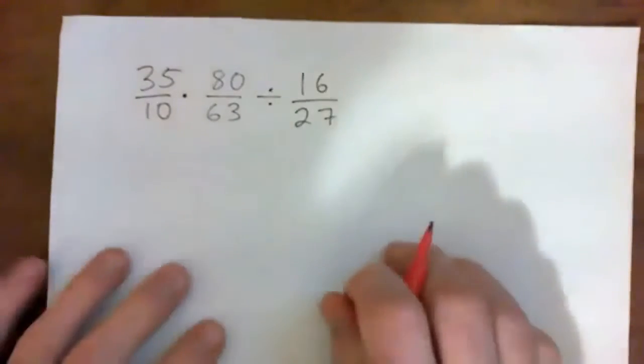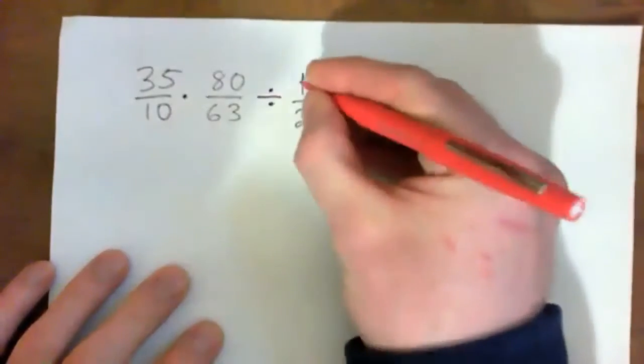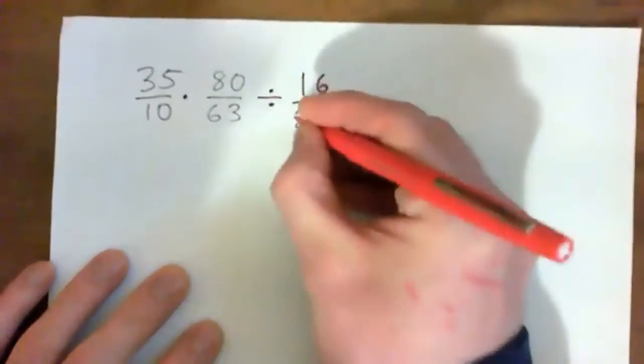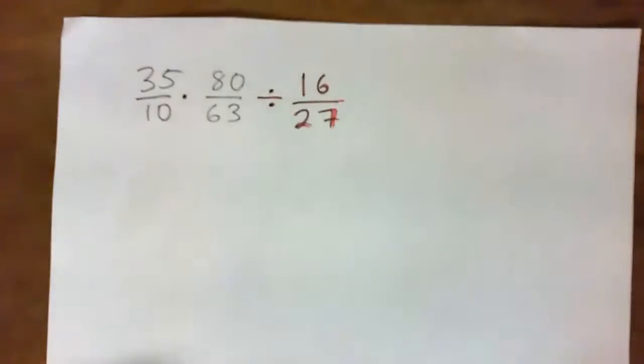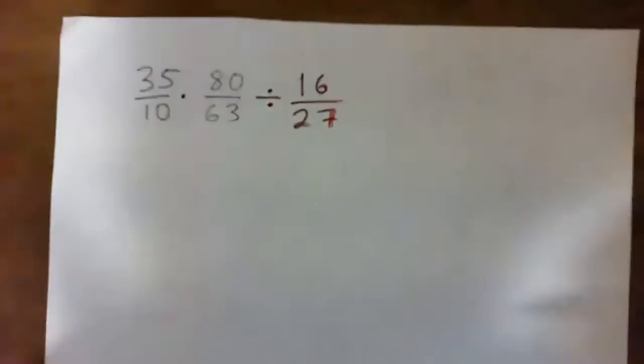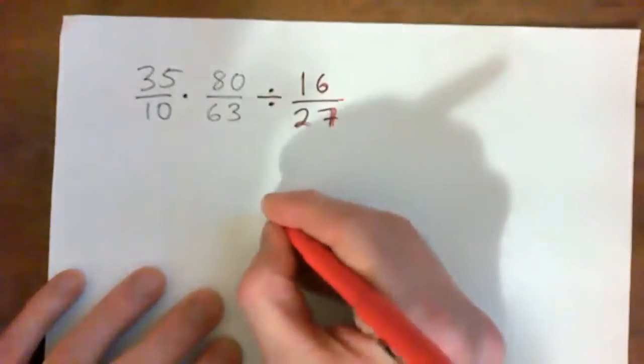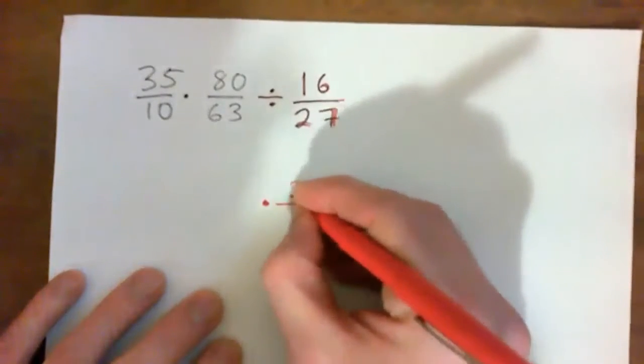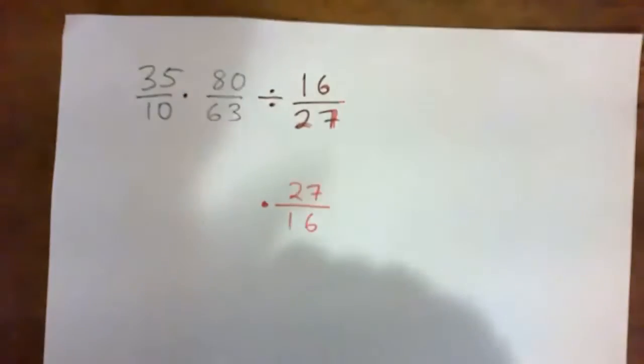So the first thing I probably want to do is deal with this dividing part. Dividing fractions, you flip and multiply. So basically, we've got to multiply by 27 over 16, and we'll write out the rest, right?